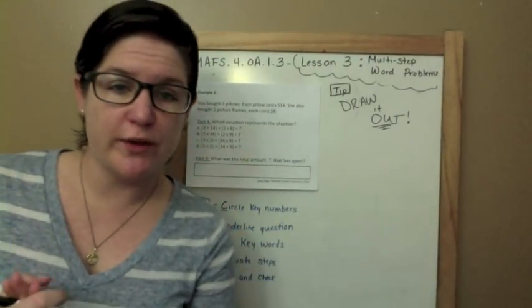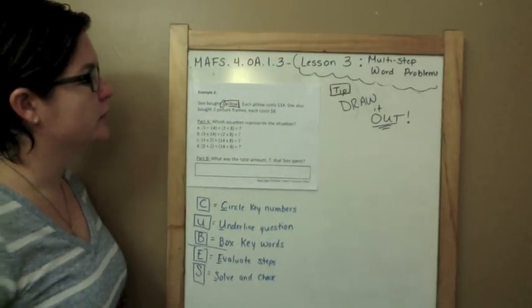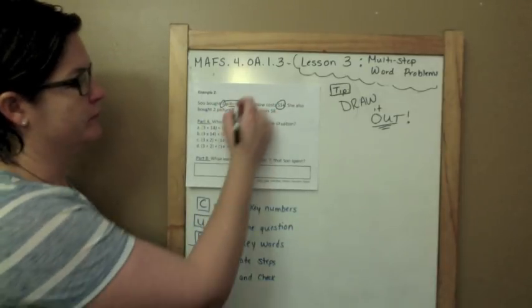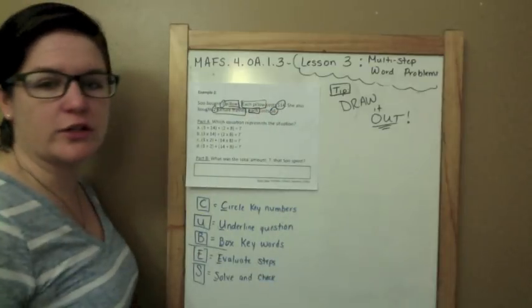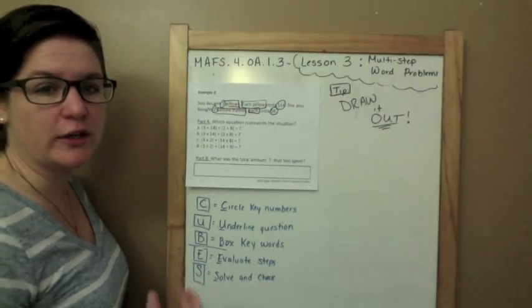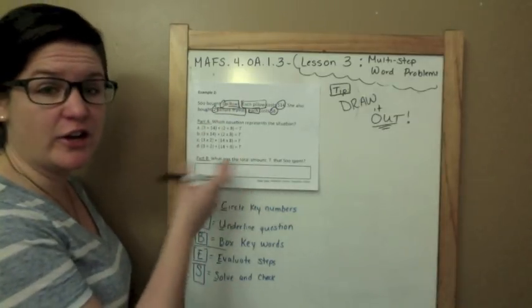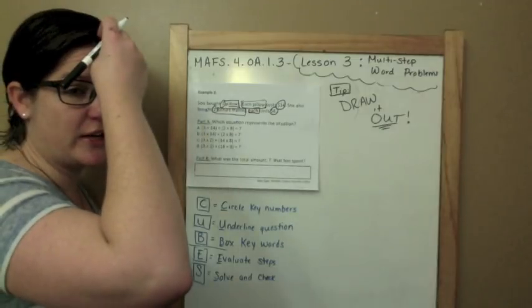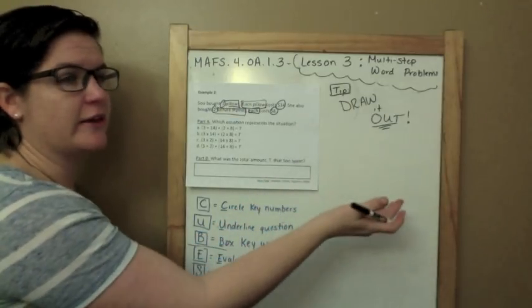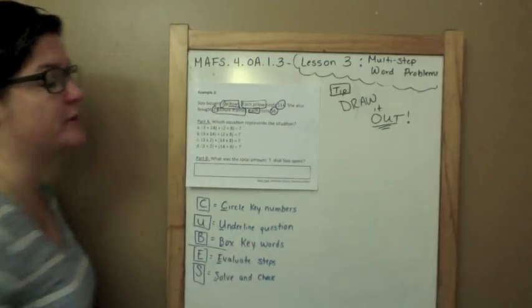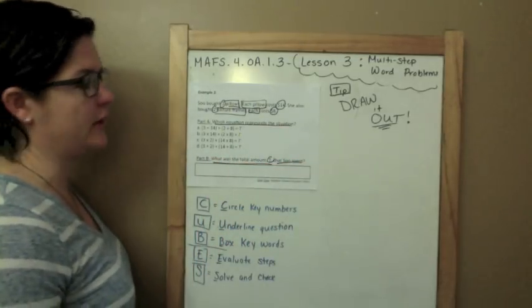Let me teach you how to do this one. Sue bought three pillows, each pillow cost fourteen dollars. She also bought two picture frames and each one cost eight dollars. Which equation represents the situation? These look, there's parentheses, I've got adding and multiplication, I've got an unknown number T. So this is kind of confusing. So let's break it down first by drawing it out, and then we'll apply the mathematics, the numbers and symbols, to represent our picture. Part B says what was the total amount T that Sue spent? So we'll get there. Let's break it down and draw it out.